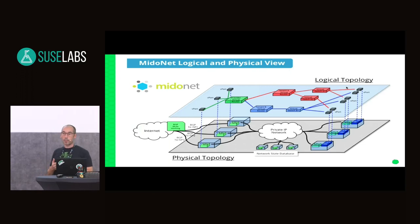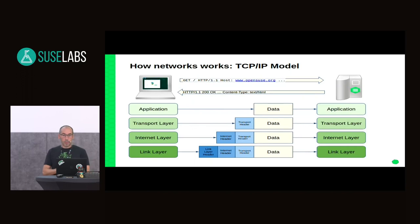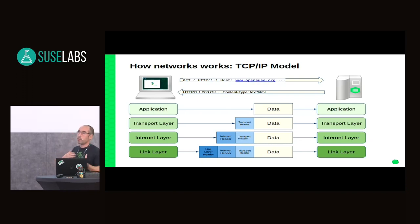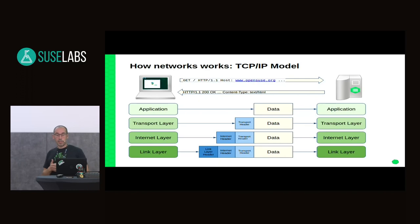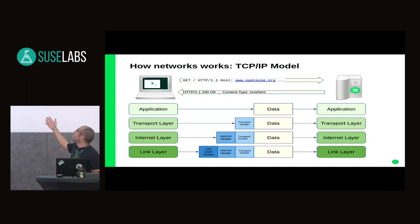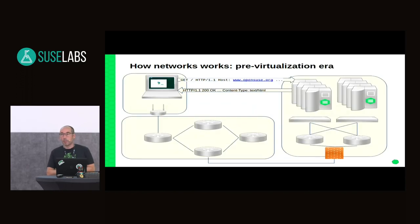They were struggling because their performance in testing was okay, but it wasn't performing in customer deployments. To set the scene and have a common understanding: a developer sees the network by simply creating an application, opening a socket, and the kernel does all the calculations. The packet goes through the network and magically appears on the other side, where another application is listening on another socket and replying back. The most typical example is doing a GET to a web server and it returns content.